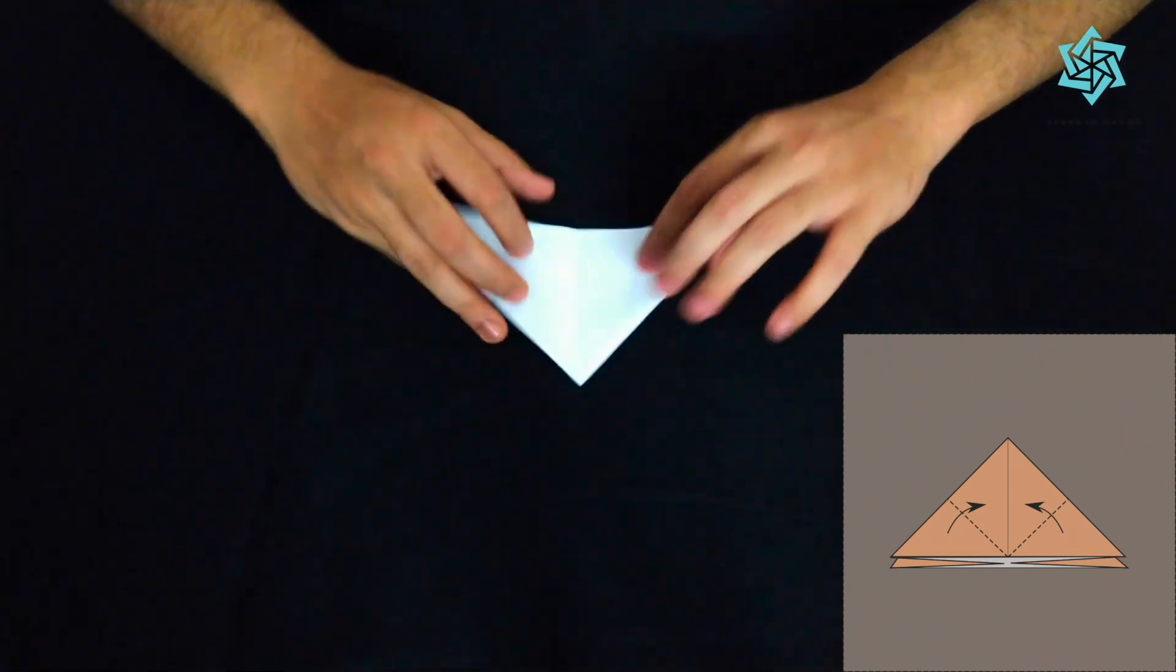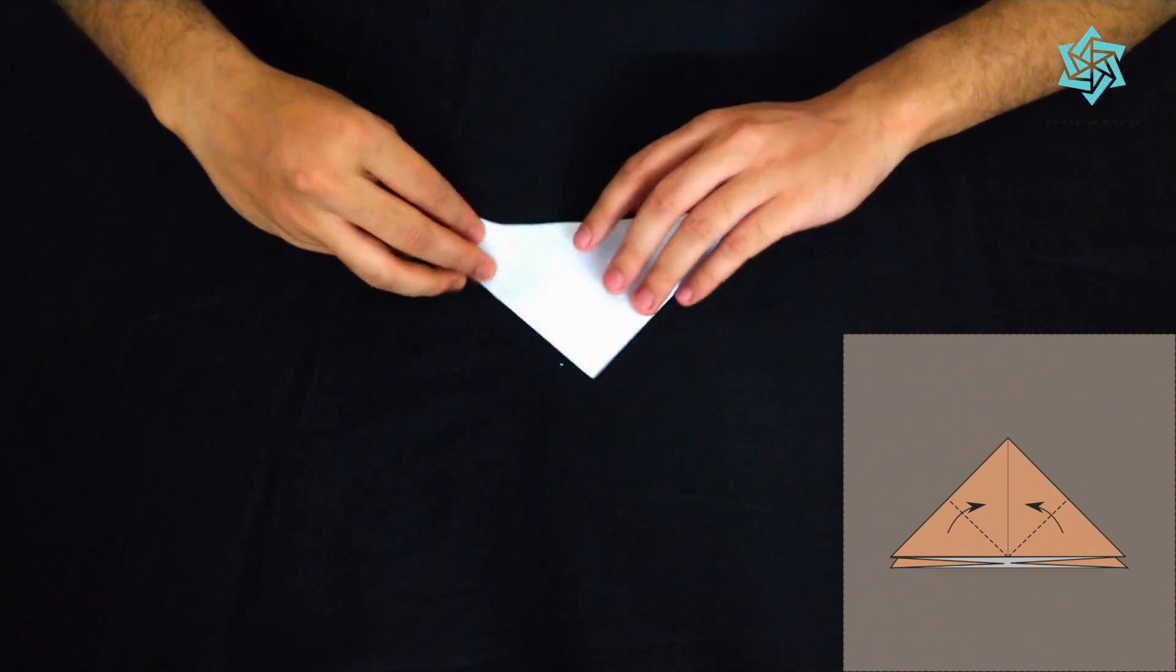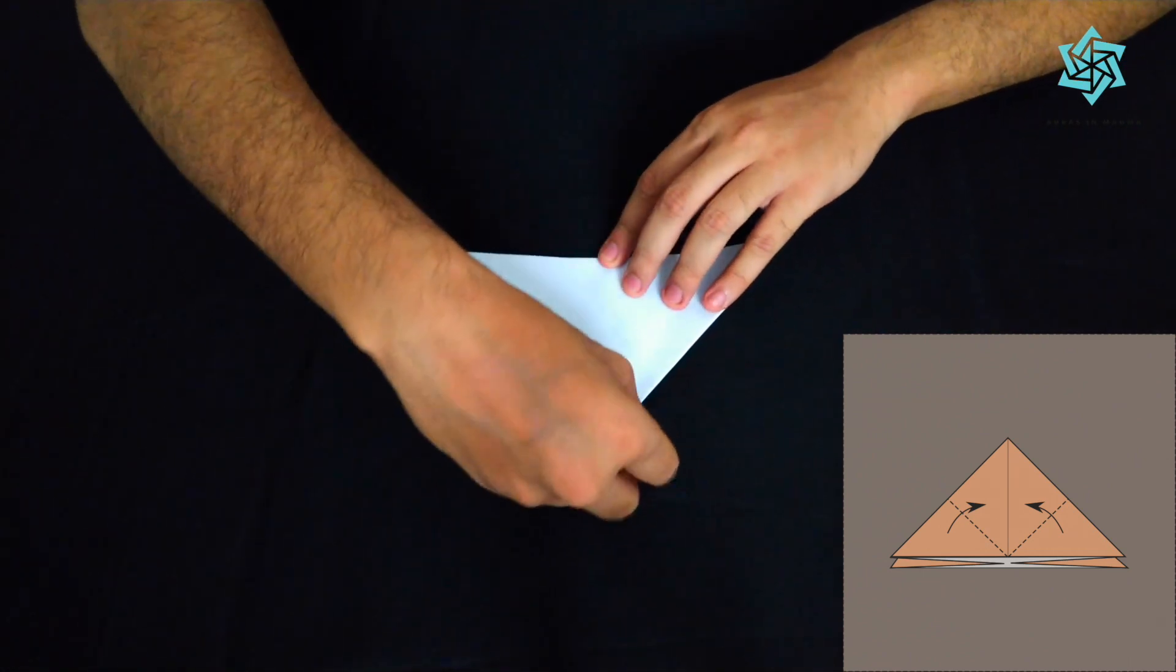Okay so we have flattened it out. So this is the water bomb base. So for making a rabbit we'll firstly try to do what we do while making a water bomb or a balloon.